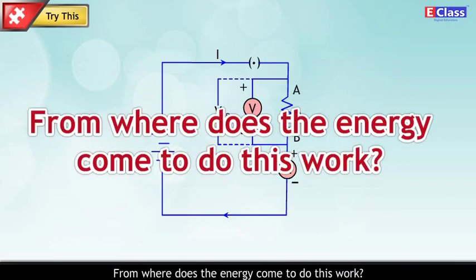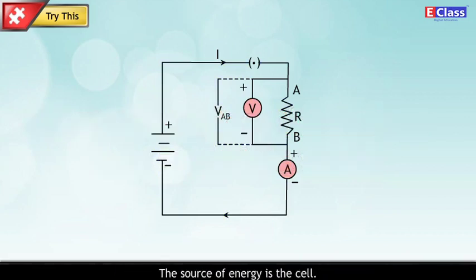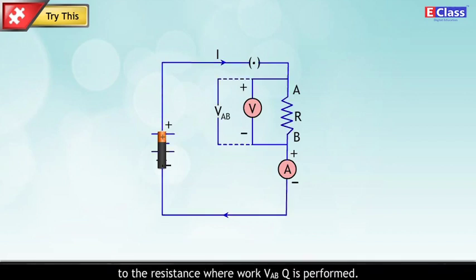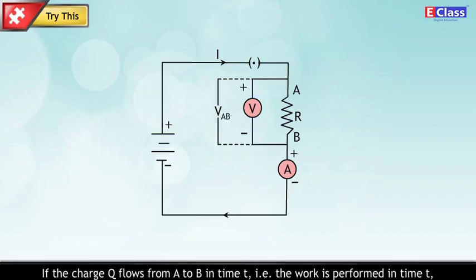From where does the energy come to do this work? The source of energy is the cell. The cell gives this energy through the charge Q to the resistance where work VAB×Q is performed. If the charge Q flows from A to B in time T,